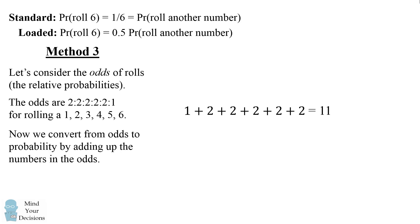In order to convert these odds into probabilities, we divide each of the relative odds by 11. So we again get to the same answer that the probability of rolling a 6 is equal to 1 divided by 11.